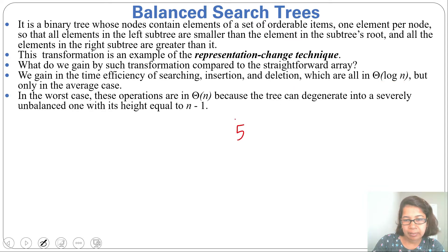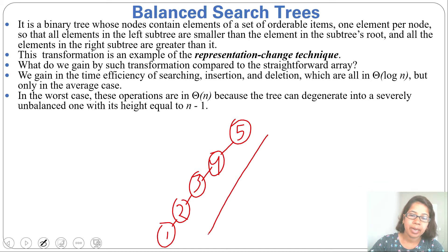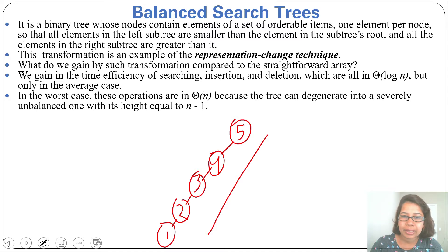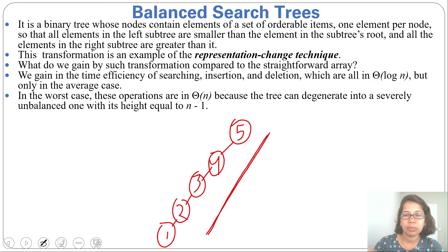Suppose this is a binary search tree where all left children are less than their parent. This is a binary search tree, but its height is 4. So searching, insertion, and deletion can take time of θ(height). As height is 4, the time complexity here is 4.